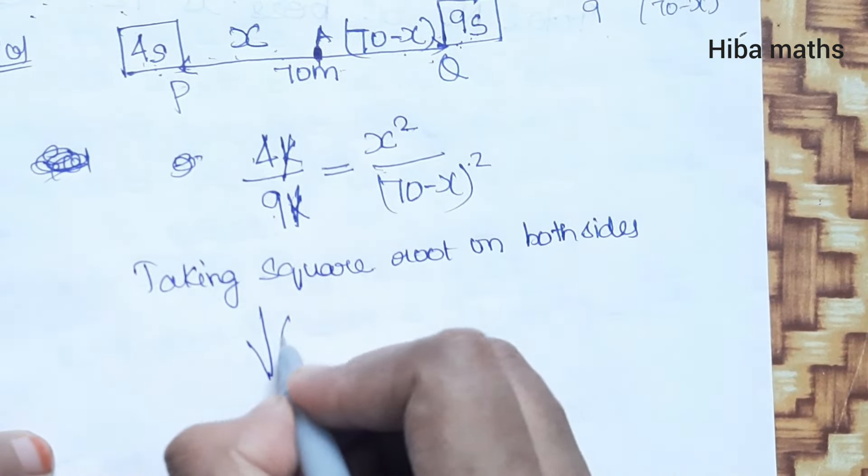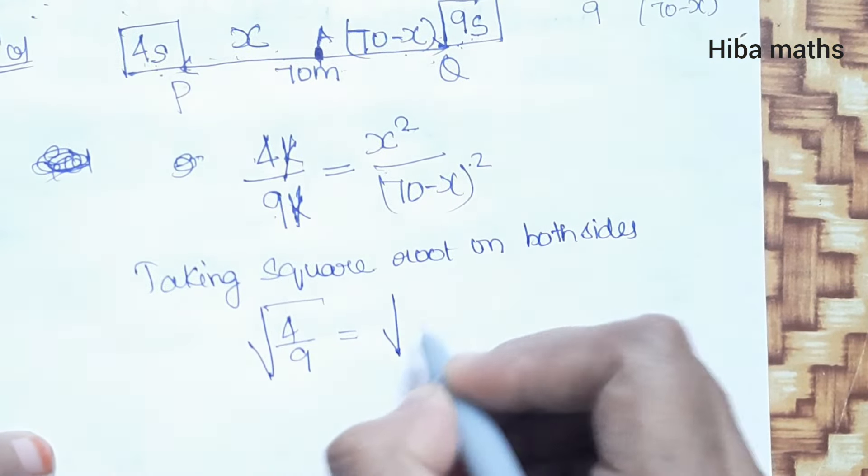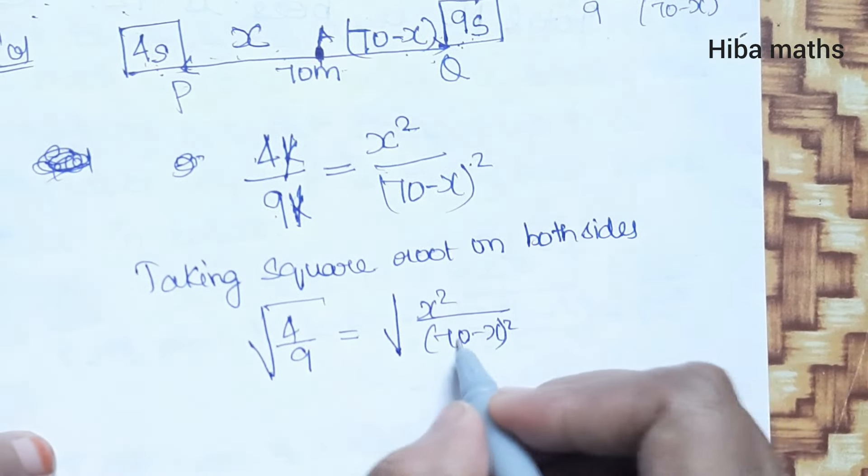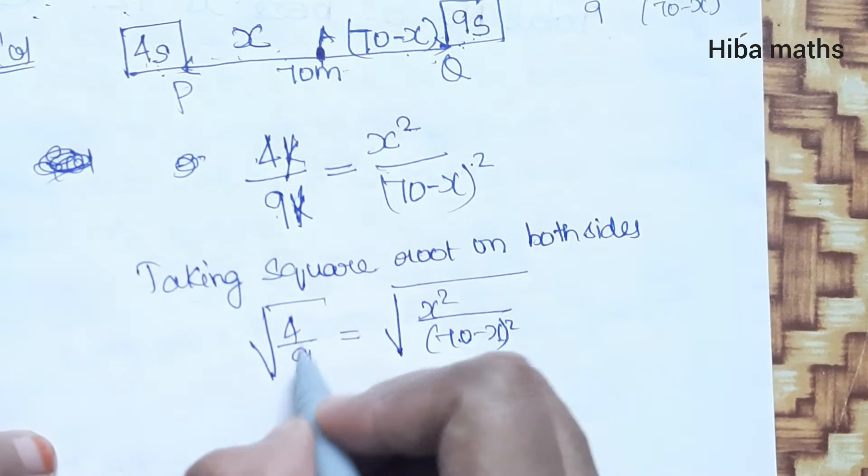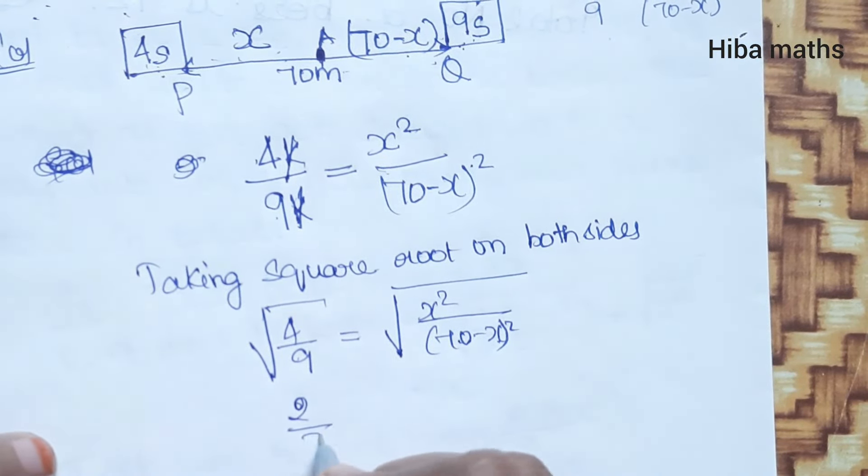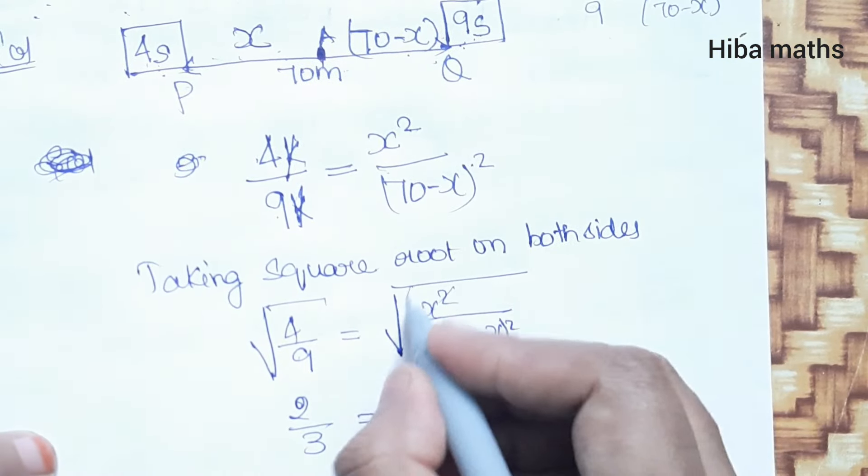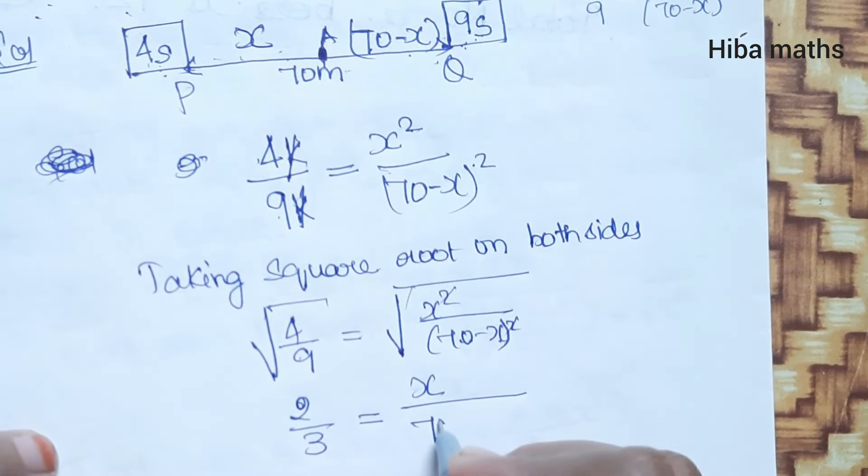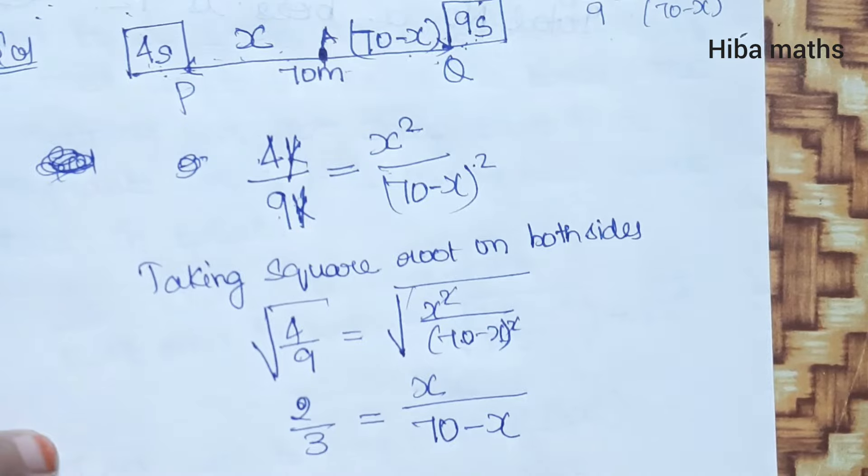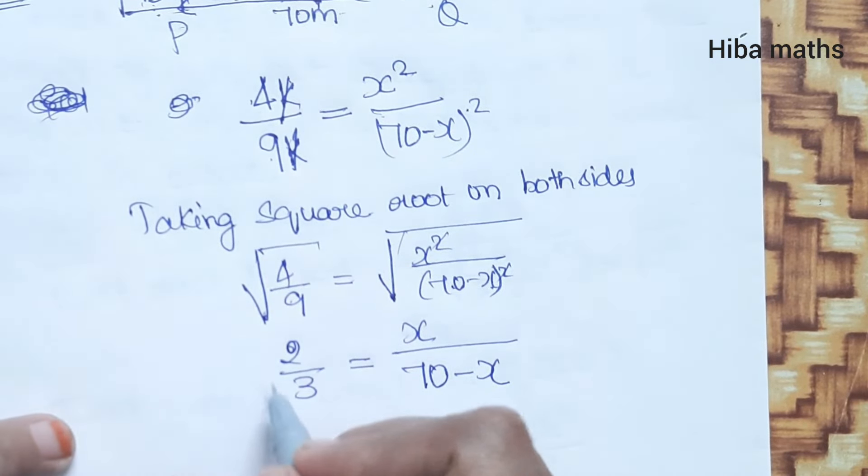Square root of 4 by 9 equals square root of x squared over (70 minus x) squared. So 2 by 3 equals x over (70 minus x), since the squares cancel.